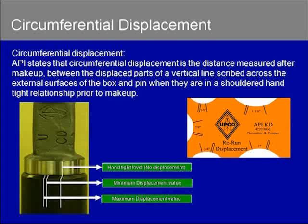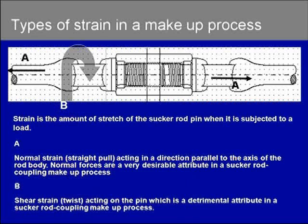Some displacement cards mark displacement with one thick line, where the inner and outer measurements on that line are your minimum and maximum displacement values. This is one of the most important phenomena in a rod coupling makeup application. When a sucker rod is made up with a coupling, the joint undergoes two different types of strain. The first is normal strain — represented by the letter A — which acts parallel to the axis of the rod body and represents the load-carrying capability of the sucker rod. The second is shear strain — represented by the letter B — which acts perpendicular to the axis of the rod body and is a very detrimental attribute in a makeup application.